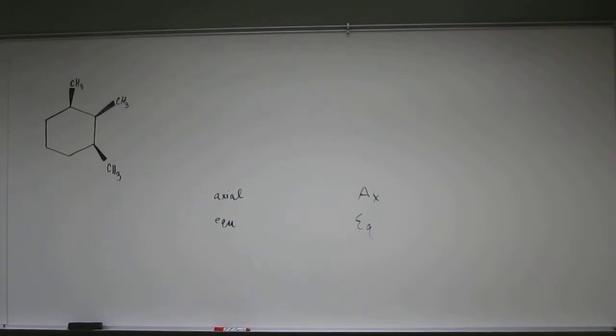Let's do one more of these, which is the more stable conformational ring isomer. So here we've got this 1, 2, 3 trimethylcyclohexane, and you can see they're all pointed towards us, so they're all pointed up.